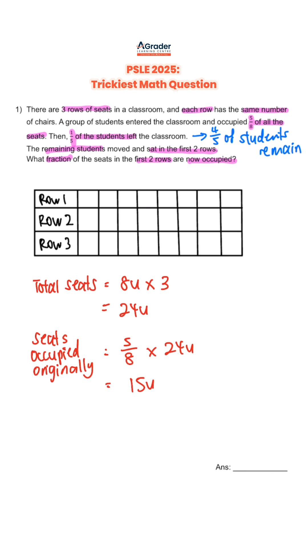Our next step would be to find out how many units of students remain. This would be the seats that are occupied in the end. We can find this by using 4-fifths times the 15 units. This gives us 12 units.